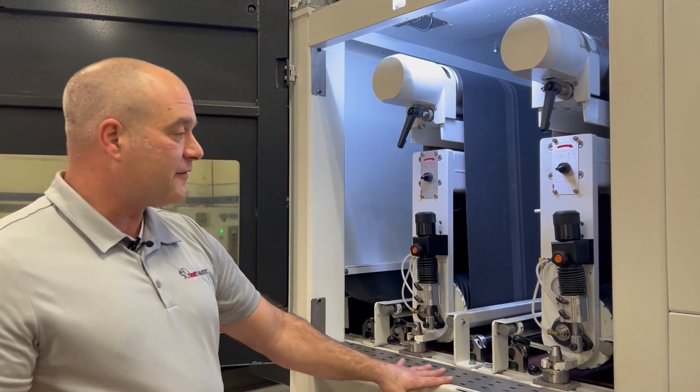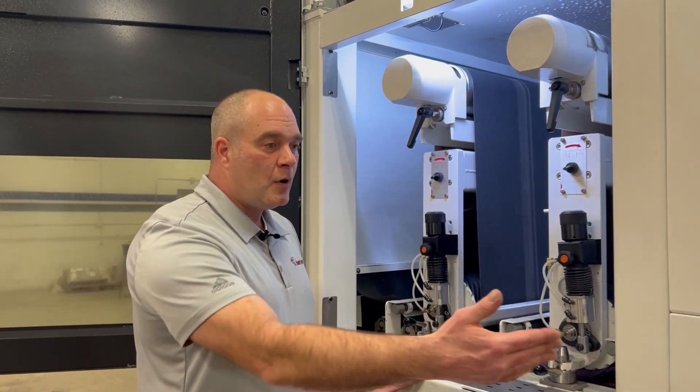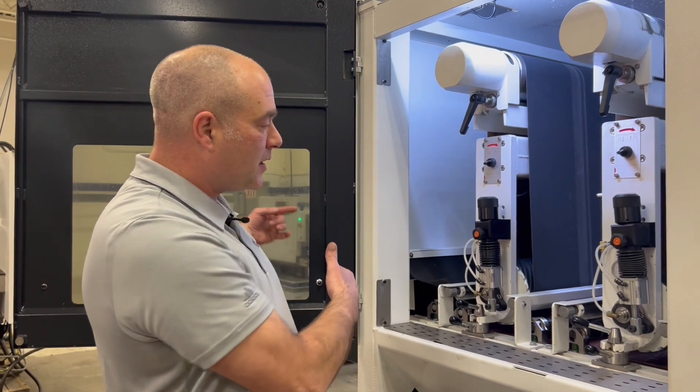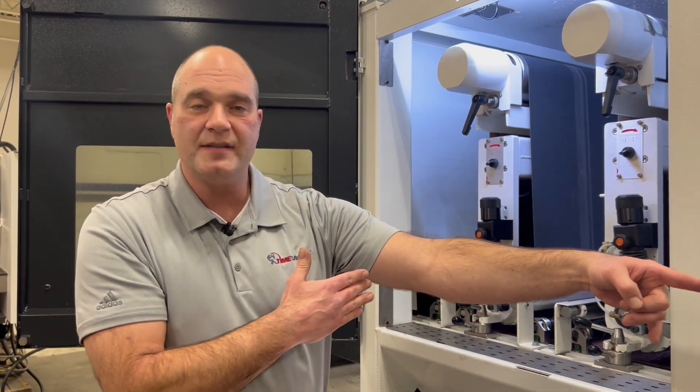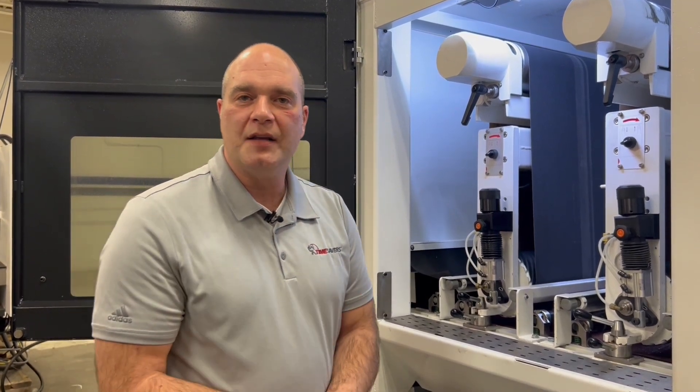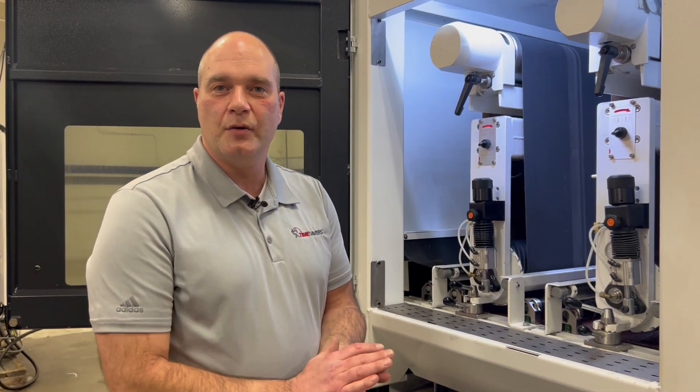This machine also does have a reversing conveyor on it so we can process parts through this machine and then once they come back we can actually bring it back through to the infeed side again and take a second pass if need be for some dimensioning work or maybe some finishing work on tube steel. I do have some tube steel here and I will run it through here later on in this video to show you its capabilities.